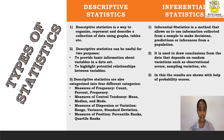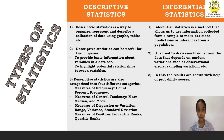Descriptive statistics are also categorized into four different categories. One, measures of frequency, i.e. count, percent, and frequency. Two, measure of central tendency, i.e. mean, median, and mode. Three, measures of dispersion or variation, i.e. range, variance, and standard deviation. Four, measure of position, i.e. percentile ranks, quartile, and ranks.